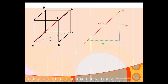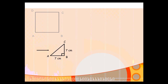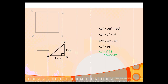What we need to do is look at it from a bird's eye point of view and consider the base of our cube — the face ABCD. If we draw a line across to split it into two right-angled triangles, the two shorter sides are both 7 centimeters long. We can find AC using Pythagoras' theorem, and we get AC equals the square root of 98, which is 9.9 centimeters.